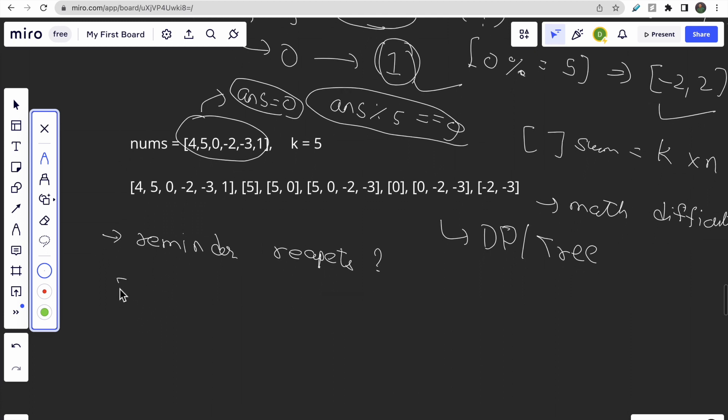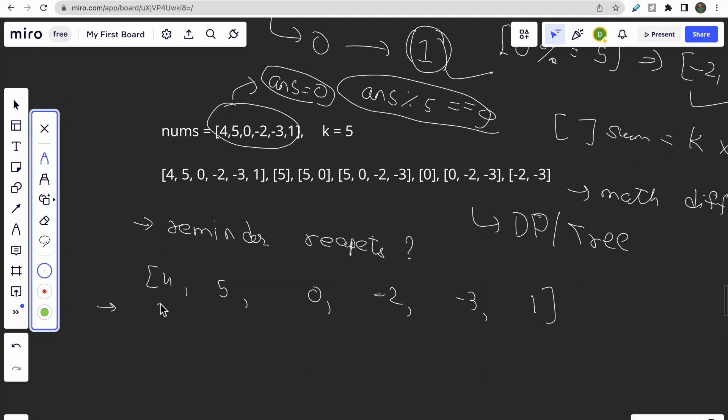So the approach says that we will find the remainder. And whenever the remainder repeats, we will get our answer. So let me show you that here we have this array 4, 5, 0, -2, -3, 1. Let us first find the sum. So here the sum is 4, here the sum is 9, 9, then 7, 4, and here the sum is 5. We will find this sum. So this is prefix sum.